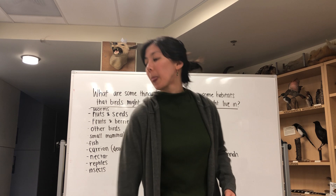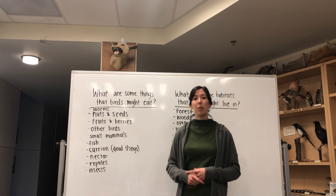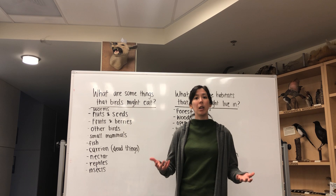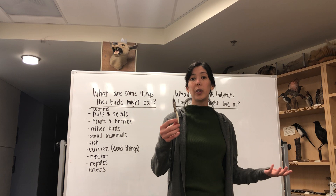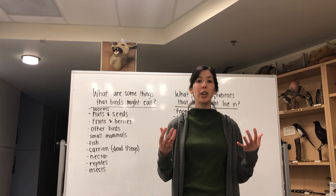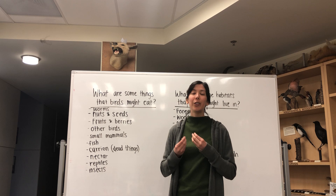We also have carrion, or dead things, on our list. Scavengers like vultures, crows, and ravens will eat animals that died from natural causes, disease, or as roadkill. Lastly, nectar is a favorite for small birds like hummingbirds and honeycreepers, which often have small straw-like slender beaks to probe in and out of flowers. Nectar is basically a sugary syrupy liquid that flowers produce — you can make it at home by adding sugar to water.